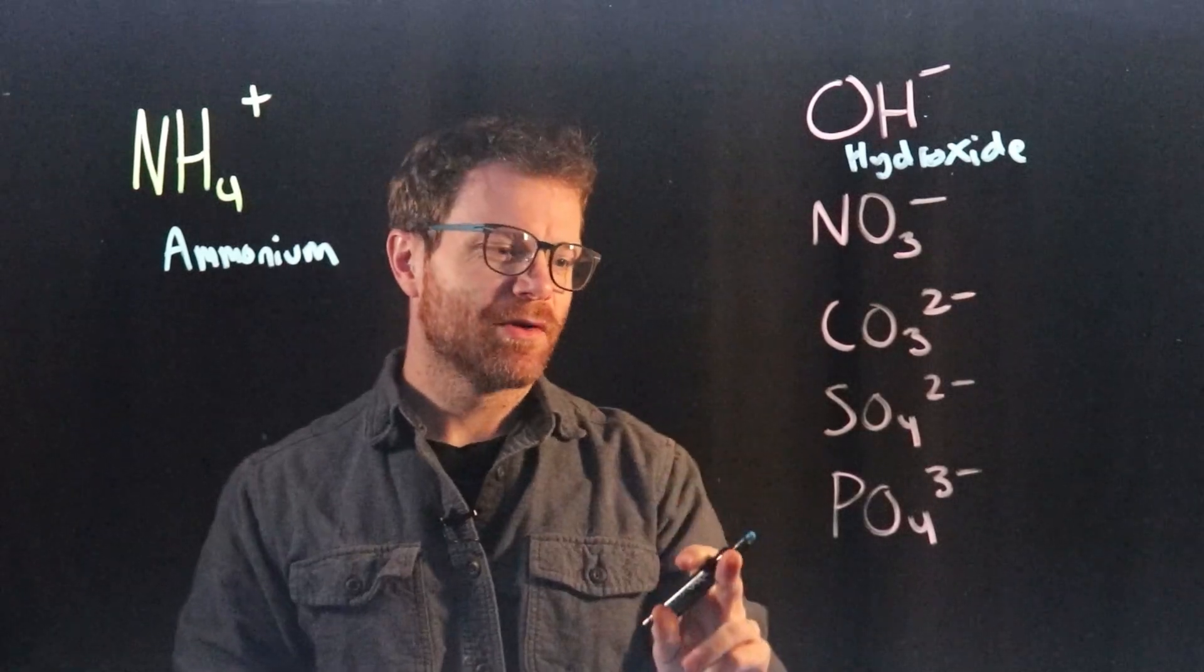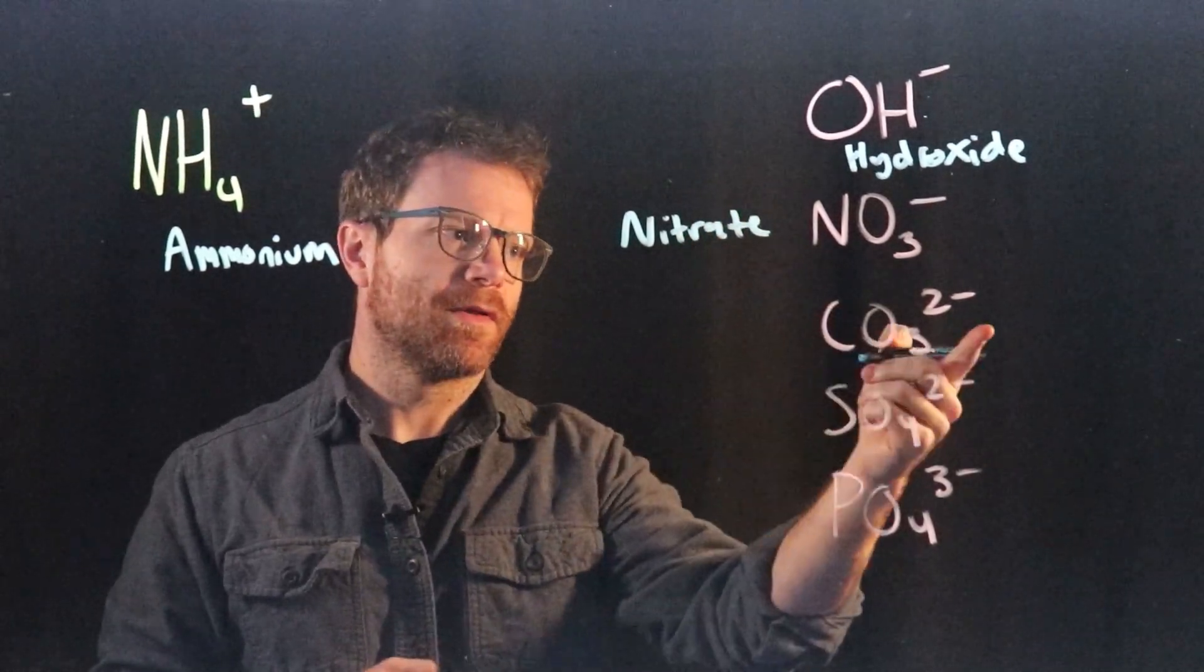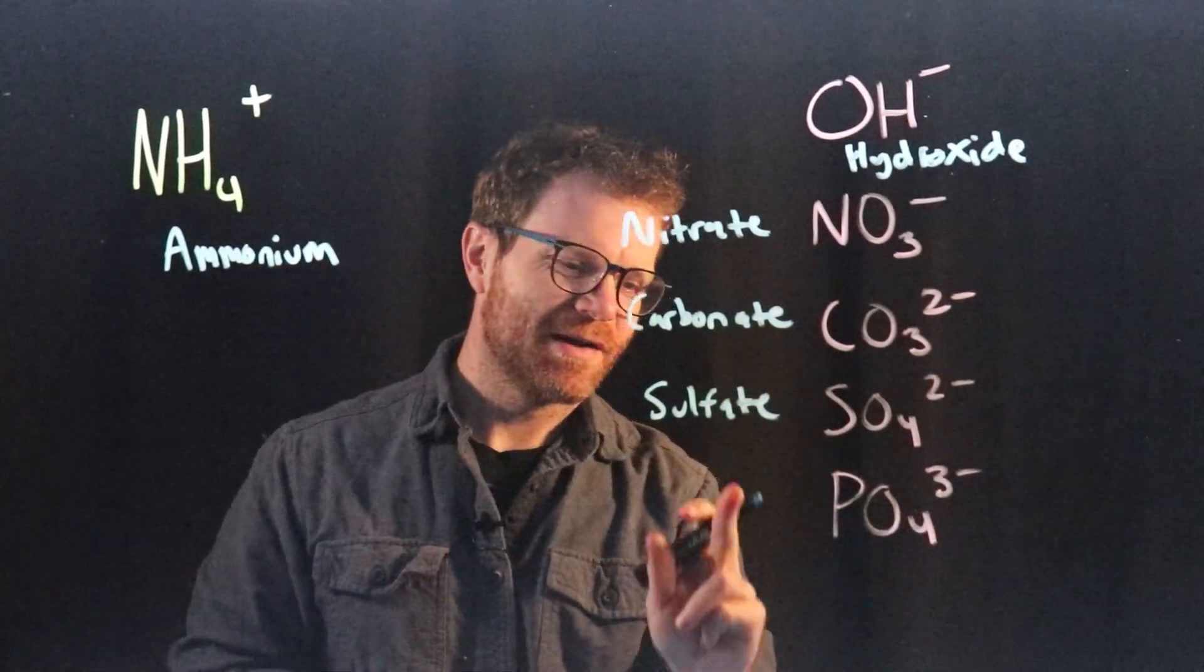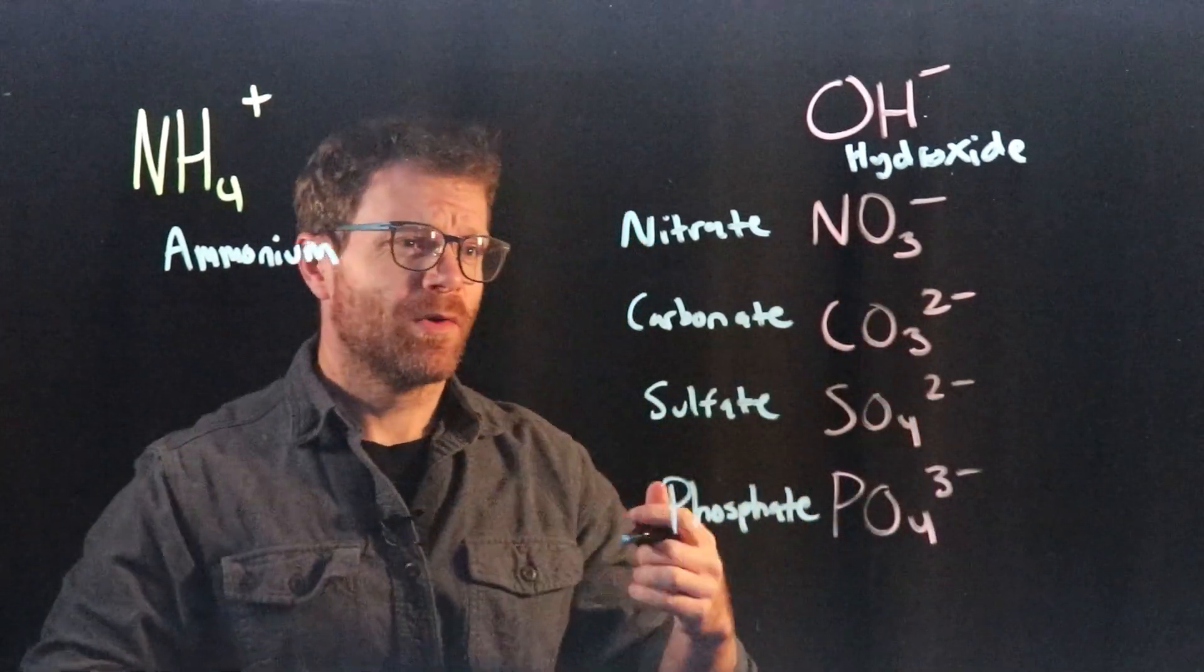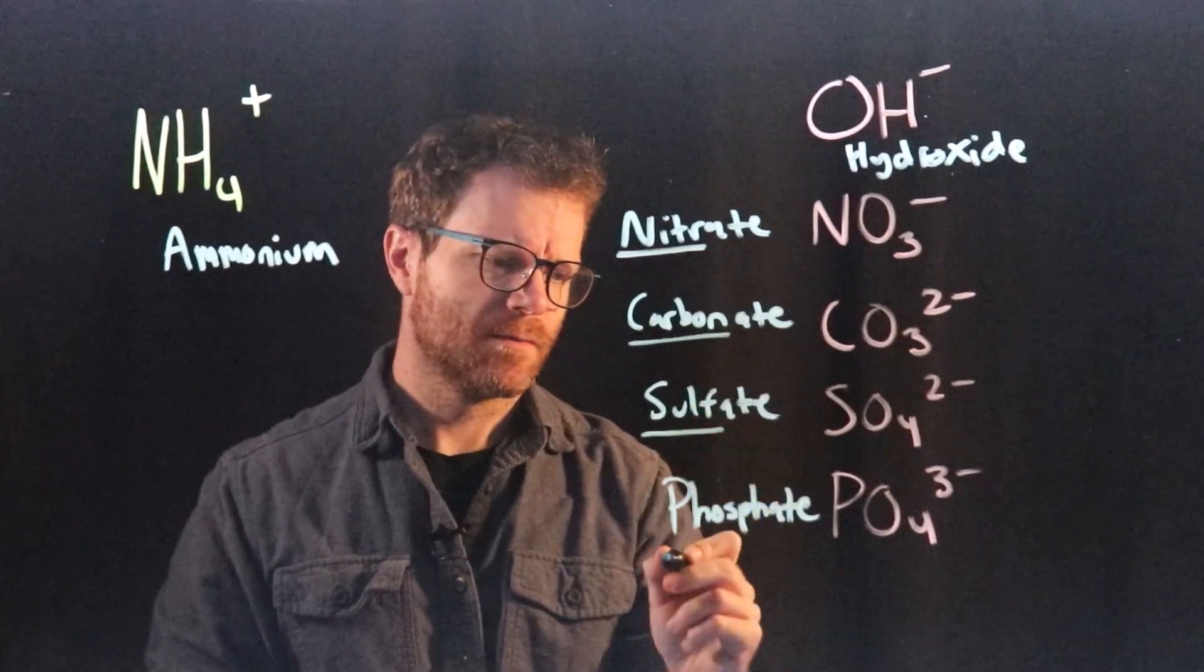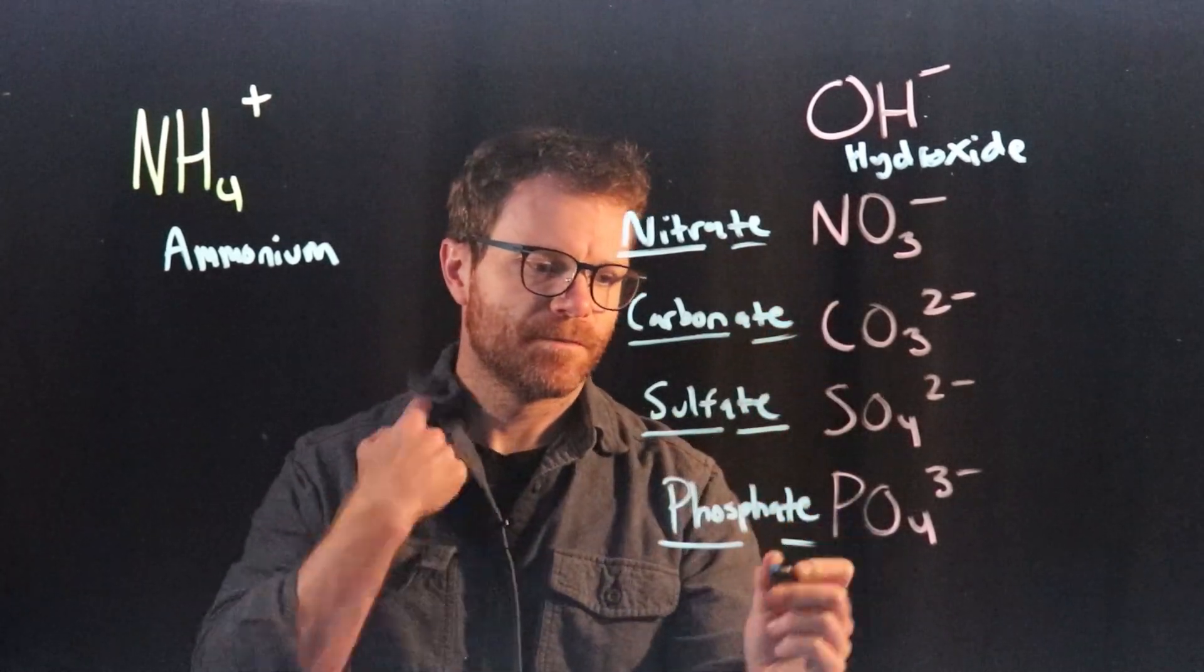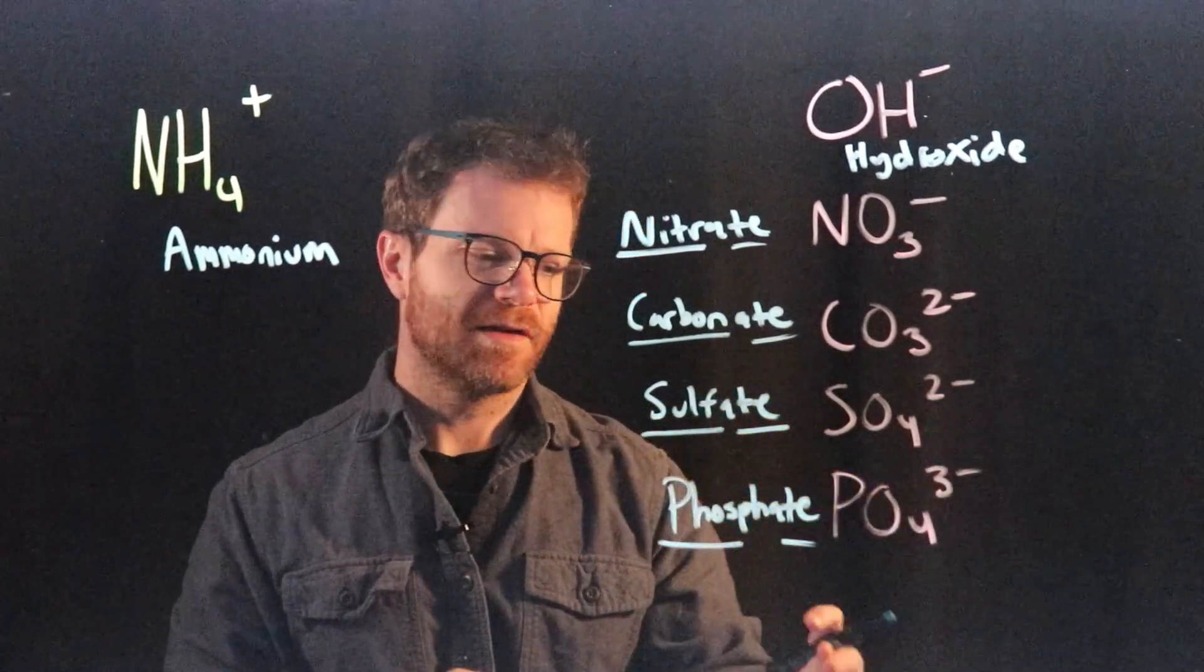These next ones all are going to have kind of a similar naming pattern. Maybe you can spot it. NO3 is called nitrate. CO3 with a minus two charge is called carbonate. SO4 with a minus two charge is called sulfate. And PO4 with a three minus charge is called phosphate. When naming all of these, we basically just take the first syllable. In some cases, the first two syllables. Nit, carbon, sulf, and phosph. And then we put on this -ate ending. So if it has a nitrogen, nitrate. If it has a carbon, carbonate. If it has a sulfur, sulfate. If it has a phosphorus, phosphate.